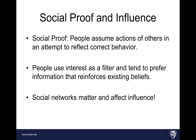Let's talk about social proof — where people assume the actions of others in an attempt to reflect correct behavior. This is where social psychology kicks in. However, people use interest as a filter and tend to prefer information that reinforces existing beliefs. People aren't looking at information from society at large; they're selecting people to trust and believe based on whether those people share similar views and tell them consistent, coherent information. Social networks matter and affect this influence, because while people might prefer trusted relationships with those who agree with them, there are other network ties that make this more complex.